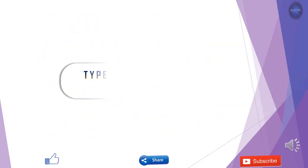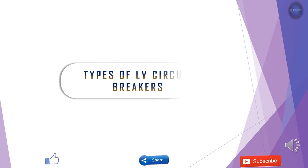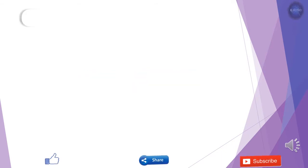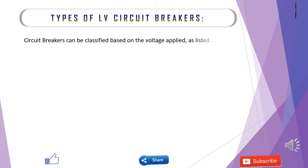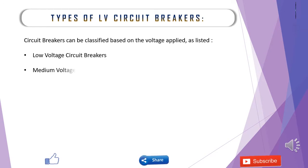Now we'll discuss about the classification of circuit breakers. Depending on the voltage applied, circuit breakers can be classified as low voltage circuit breakers, medium voltage circuit breakers, and high voltage circuit breakers. In this video, I will be discussing about only the low voltage type of circuit breakers.